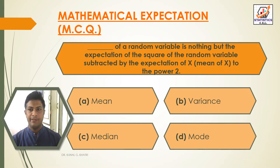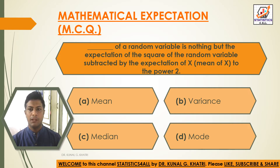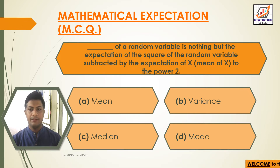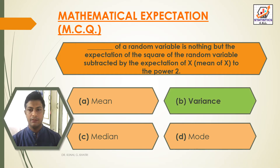Dash of a random variable is nothing but the expectation of the square of the random variable subtracted by the expectation of x, that is mean of x, to the power 2. Option A — Mean; Option B — Variance; Option C — Median; Option D — Mode. The answer is Option B: Variance. Variance of a random variable is the expectation of the square of the random variable subtracted by the expectation of x (mean of x) to the power 2.